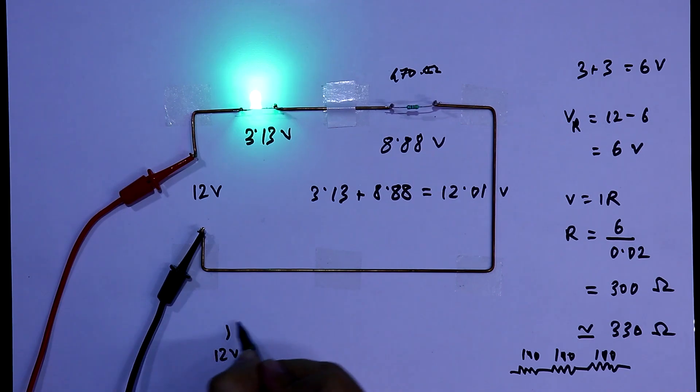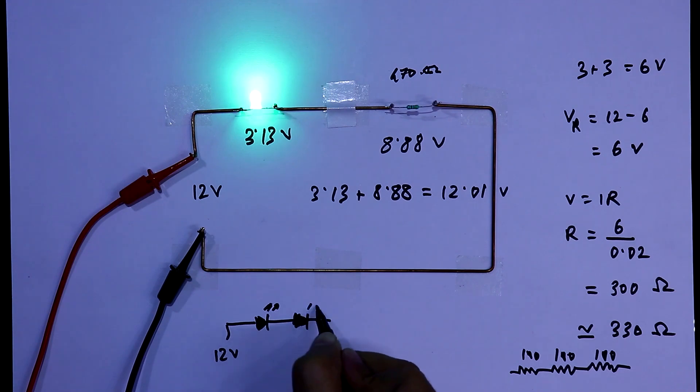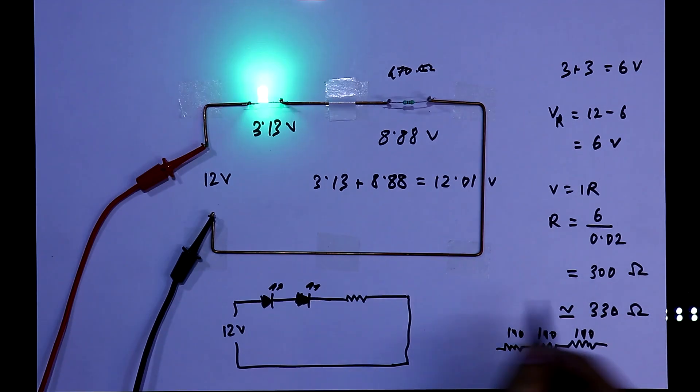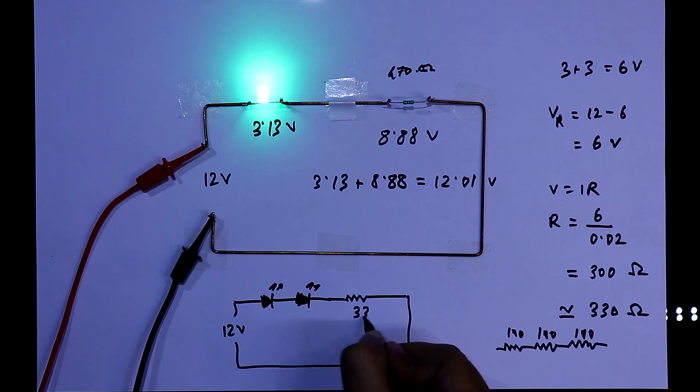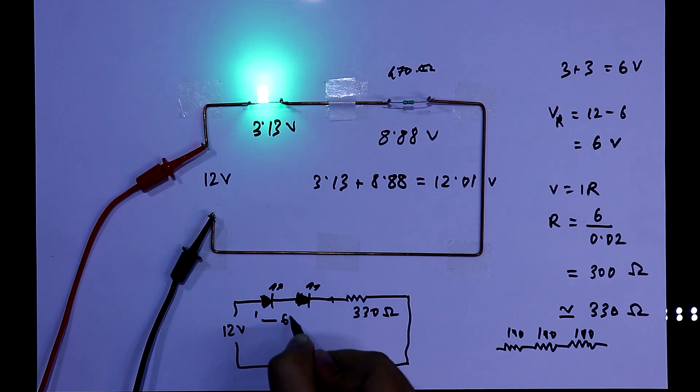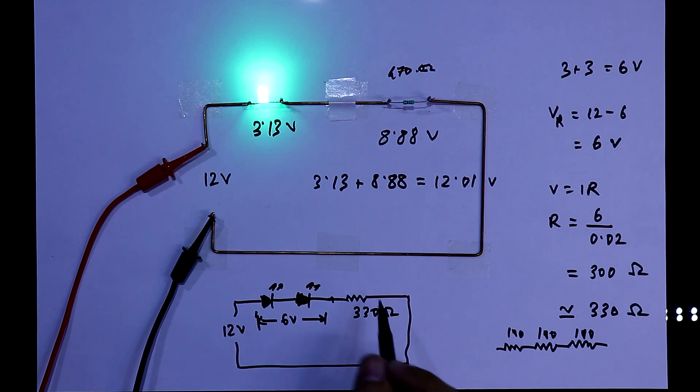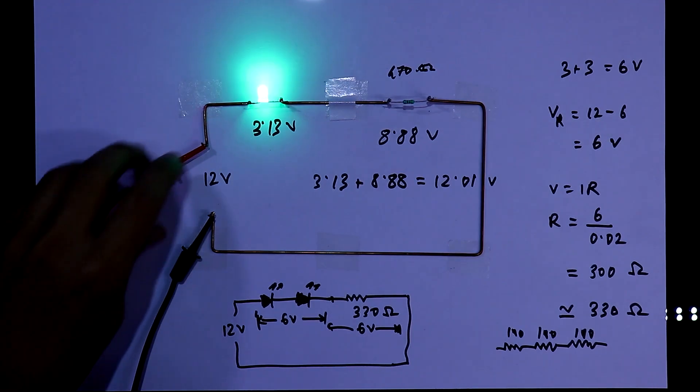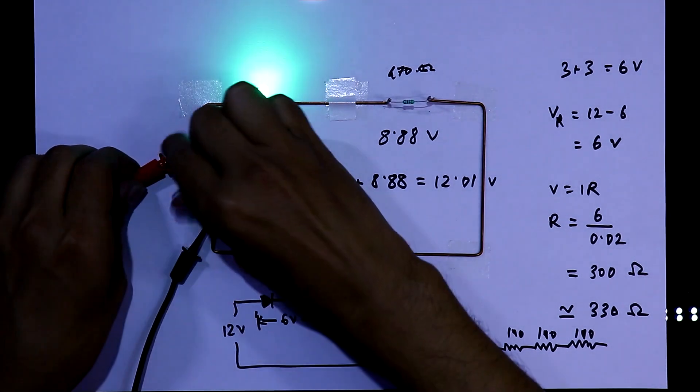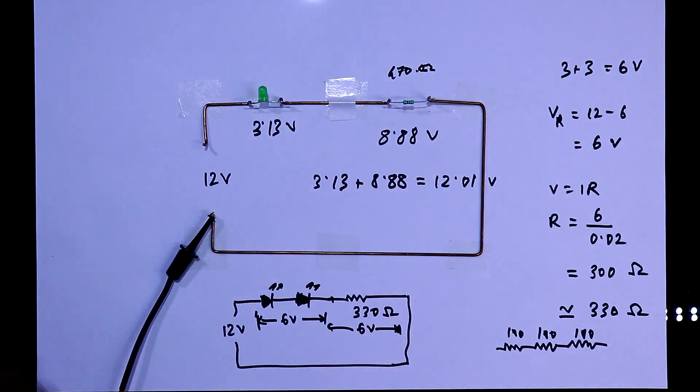So our circuit diagram will be: Here is 12V. Two LEDs will be in series. And according to the calculation we will use 330 ohms. The voltage drop for both the LEDs will be 6V. And here we have to drop another 6V. I am disconnecting the power supply.